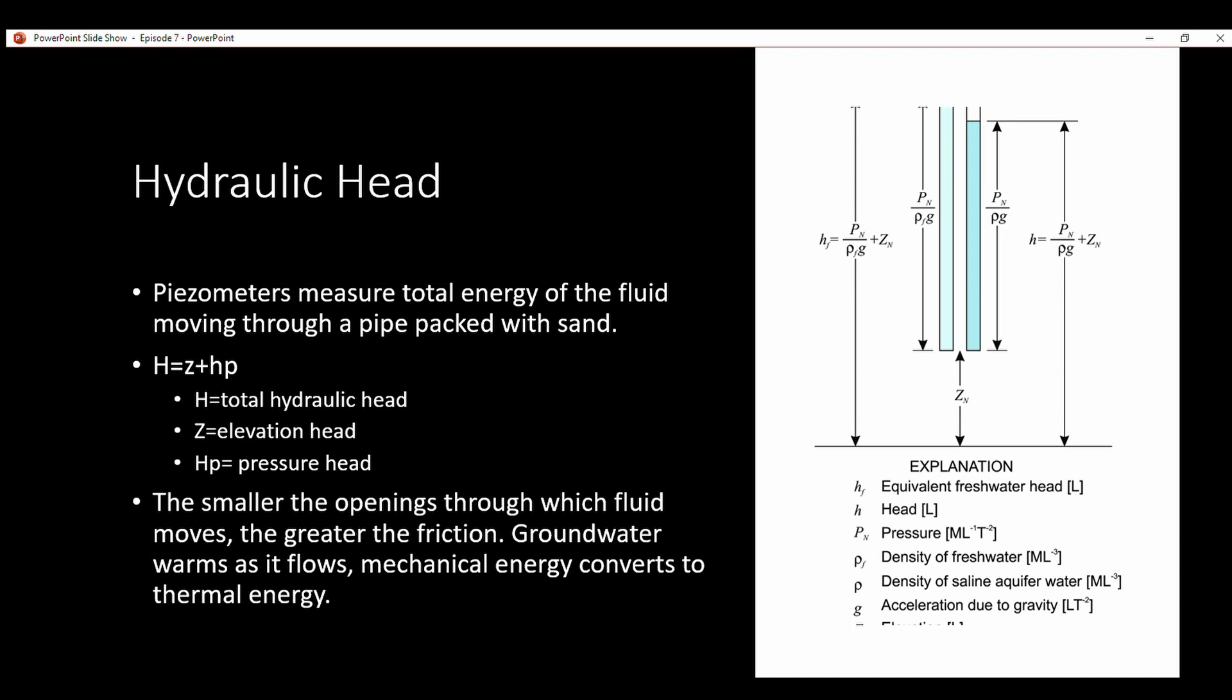The hydraulic head. Piezometers, which you can see on the right, measure the total energy of the fluid moving through a pipe packed with sand. To figure out hydraulic head, you find the elevation head and add it to the pressure head. That'll give you your total hydraulic head. The way I calculate it professionally is you take the elevation datum that you have from a surveyor, for instance, and you subtract the water table measurement. You subtract the elevation from that and that'll give you your hydraulic head as well. The smaller the openings through which fluid moves, the greater the friction. Groundwater warms as it flows, and mechanical energy that makes the water flow is converted to thermal energy.